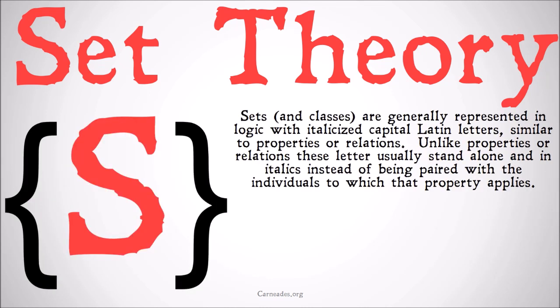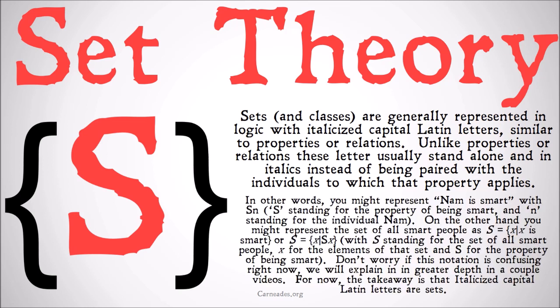Sets and classes are generally represented in logic with italicized capital Latin letters, similar to properties or relations. Unlike properties or relations, these letters usually stand alone in italics instead of being paired with the individuals to which the property applies. For example, you might represent 'Nom is smart' with S-N, where S stands for the property of being smart and N stands for the individual Nom — a review from propositional and predicate calculus.